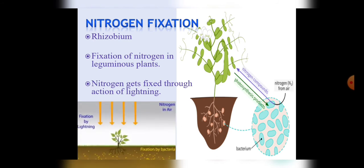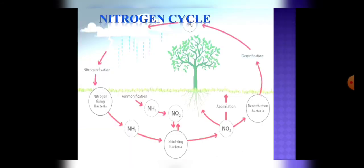So to know this process, let's understand about the nitrogen cycle. Students, as we all know that nitrogen is present in the atmosphere as 78 percent.